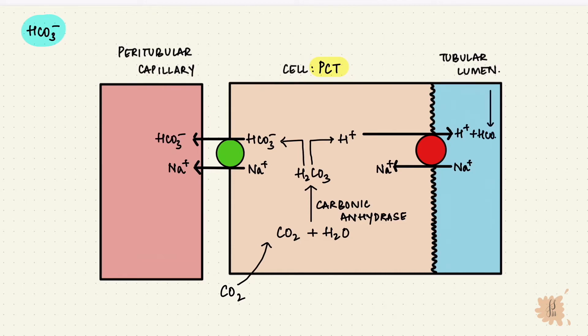Bicarb gets reabsorbed with sodium as a co-transport in this part of the nephron. Hydrogen ions get exchanged for sodium by the sodium hydrogen exchanger that's on the luminal membrane, so the hydrogen ions land up in the lumen, where it binds to bicarb, which is in the glomerular filtrate, and forms carbonic acid. That then forms carbon dioxide and water, and the carbon dioxide then diffuses back into the cell. Around 80% of bicarb gets reabsorbed this way.